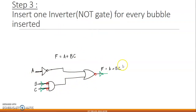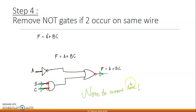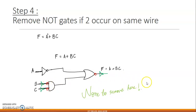The next step, like before: for every bubble inserted, you insert an extra NOT gate. So you insert an extra inverter for every bubble. If you see any double inverters, remove them since double negation cancels. In this case, there are no double inverters to remove, so we continue.